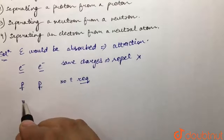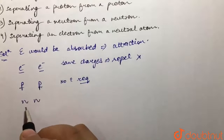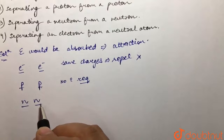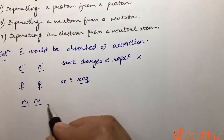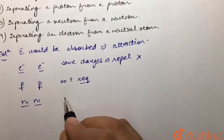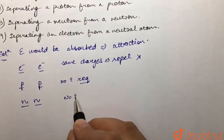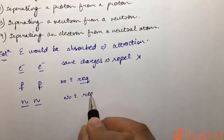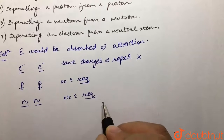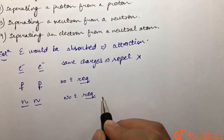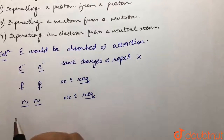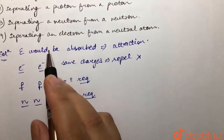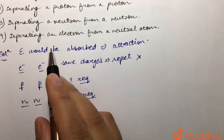The third option is separating a neutron from a neutron. Neutrons are not charged, but they are of the same type, so again there would be no energy requirement for their separation.